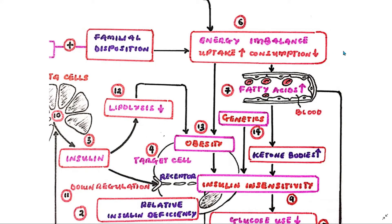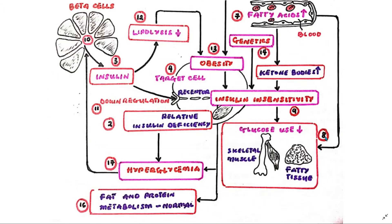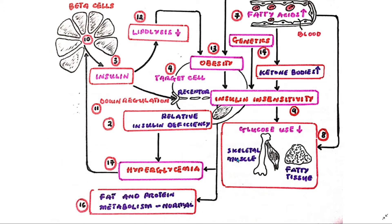The imbalance between energy supply and expenditure increases the concentration of fatty acids in the blood. This in turn reduces glucose utilization in muscle and fatty tissues. The result is a resistance to insulin, and this forces an increase of insulin release from the beta cells.